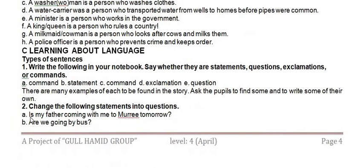Let's move forward to learning about language — types of sentences. What are the types of sentences? There are four types: simple statement, question, exclamation, and command. Statements are simple declarations — for example, 'My name is so-and-so.' Questions are when we are asking something. Exclamations express our emotions. Commands are when we give an order.